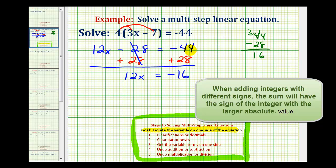But since negative forty-four had the larger absolute value, this sum is going to be negative. And that should make sense because the negative forty-four is going to outweigh the positive twenty-eight, resulting in a negative sum.